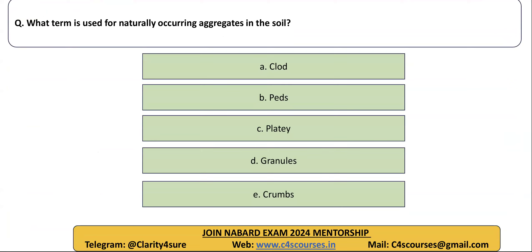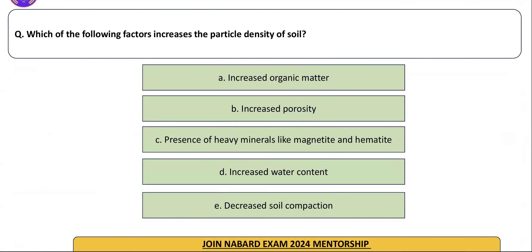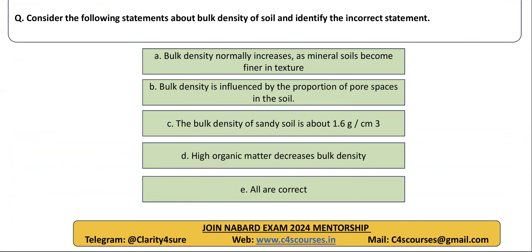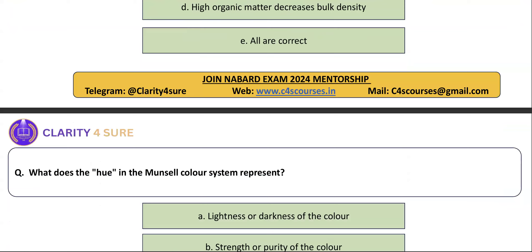Which term is used for naturally occurring aggregates in soil? The right answer is peds. Which of the following factors increases the particle density of soil? C is the right answer. Consider the following statements about bulk density of soil and identify the incorrect statement. The incorrect statement is A — that bulk density always increases as mineral soil becomes fine in texture.